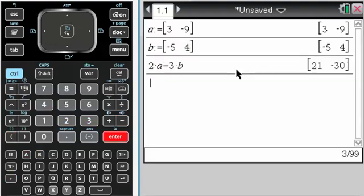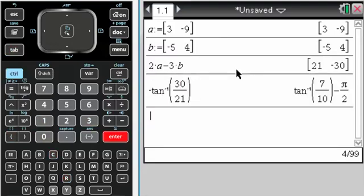So 2a minus 3b. The direction angle, I can just look at that and I know that it's going to be the negative arctan of 30 over 21. So I'm just typing that to show you what I would put.